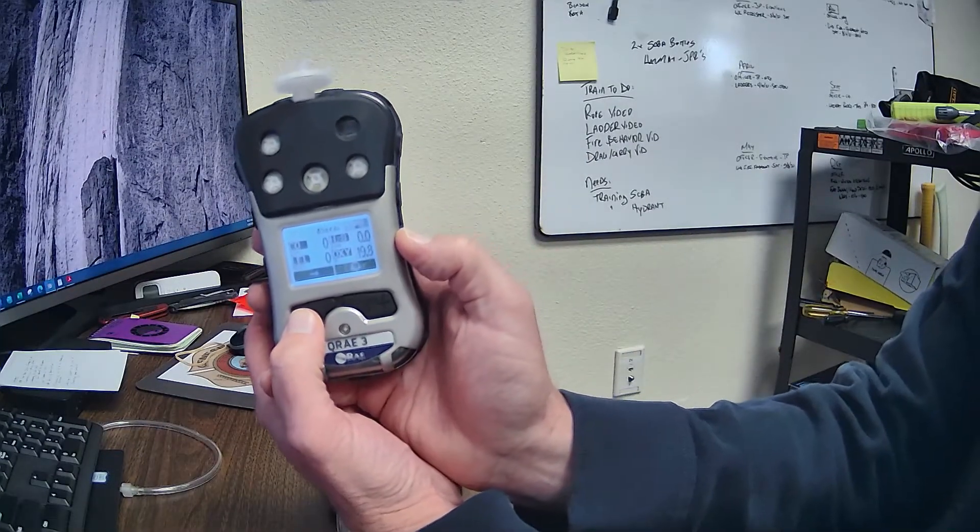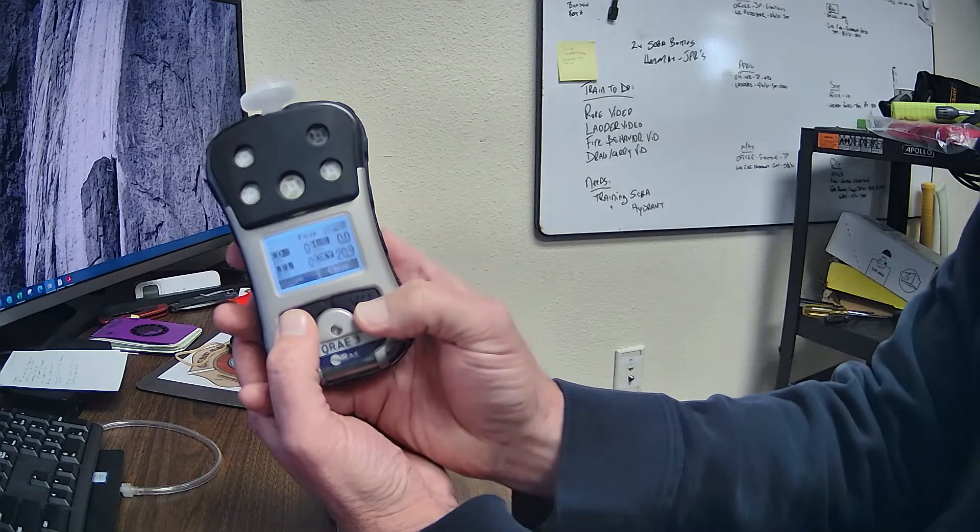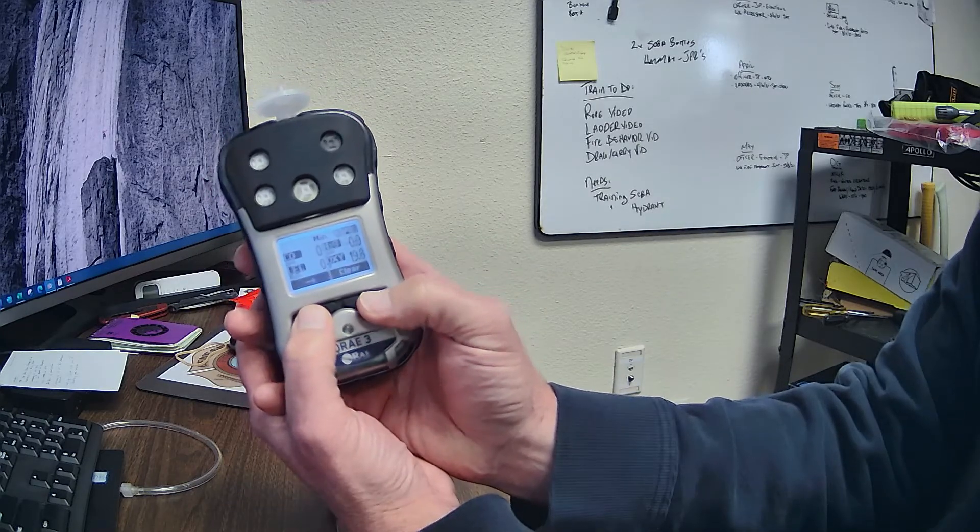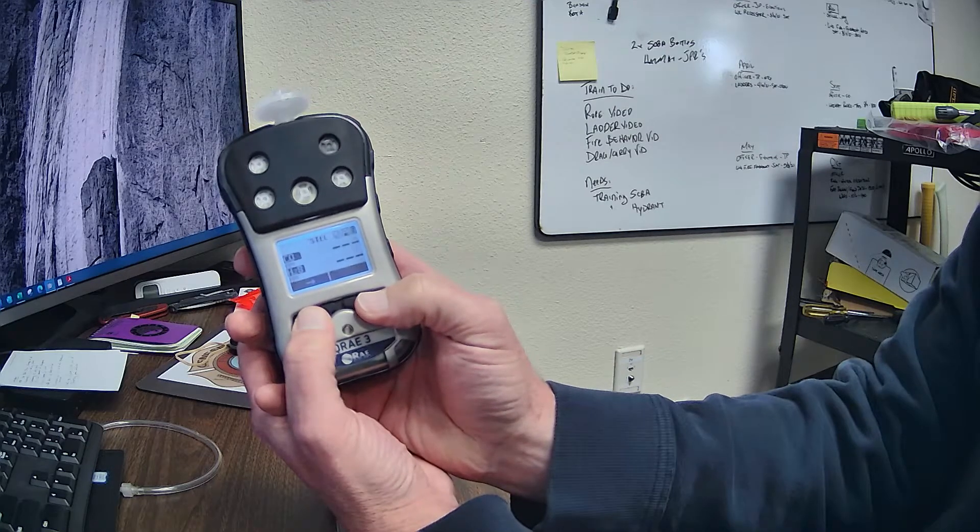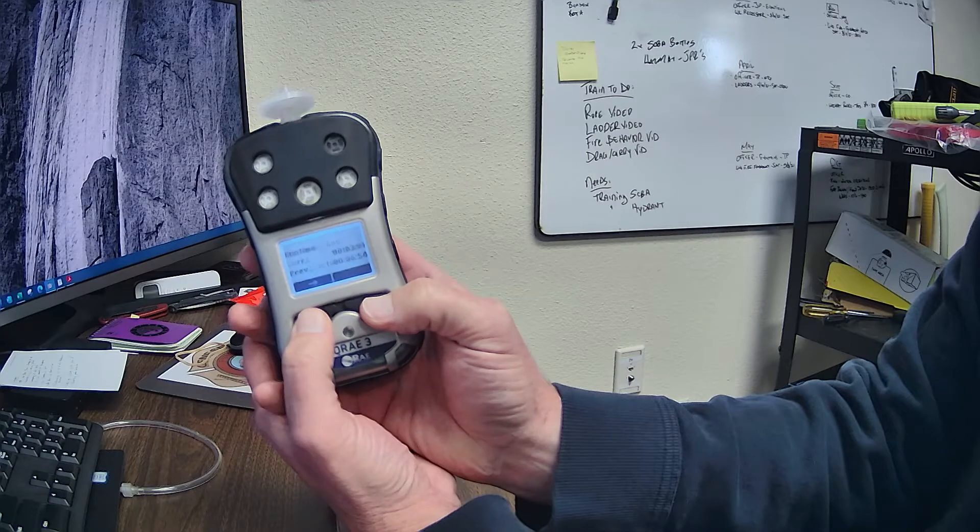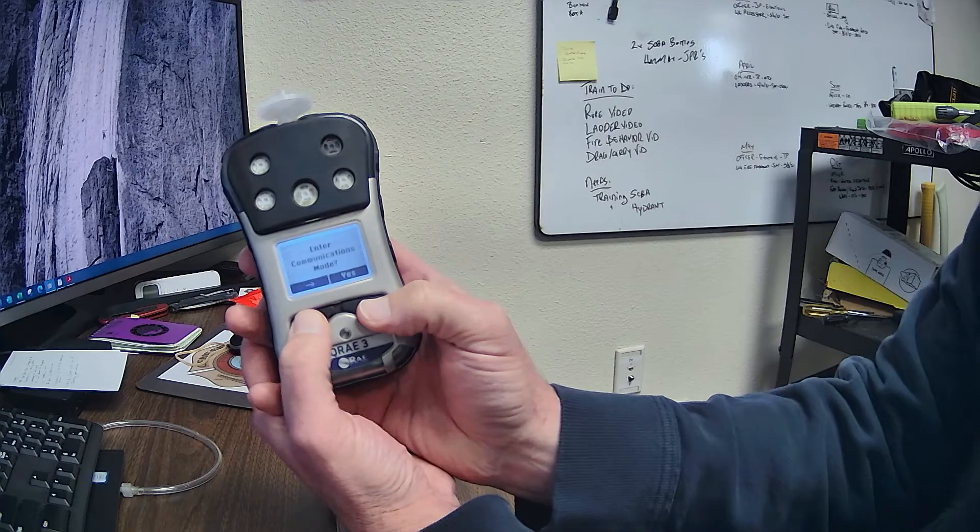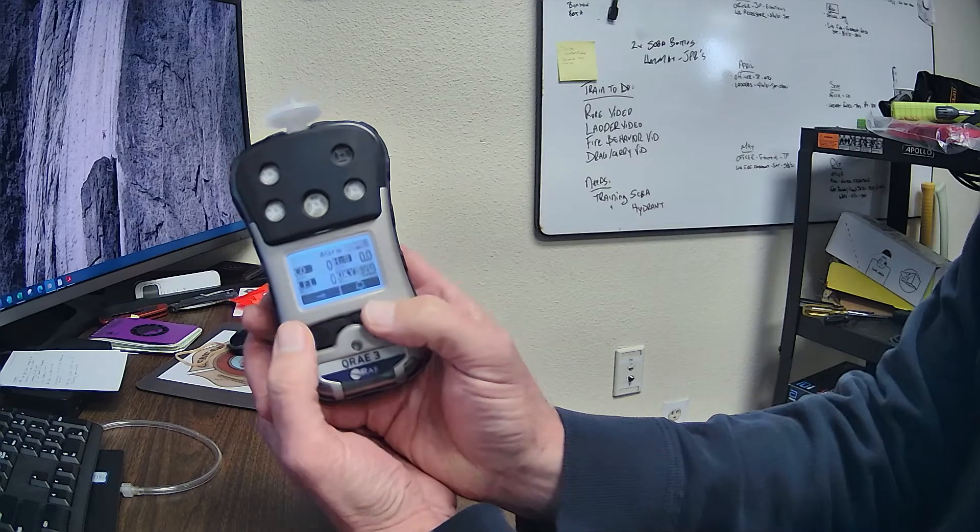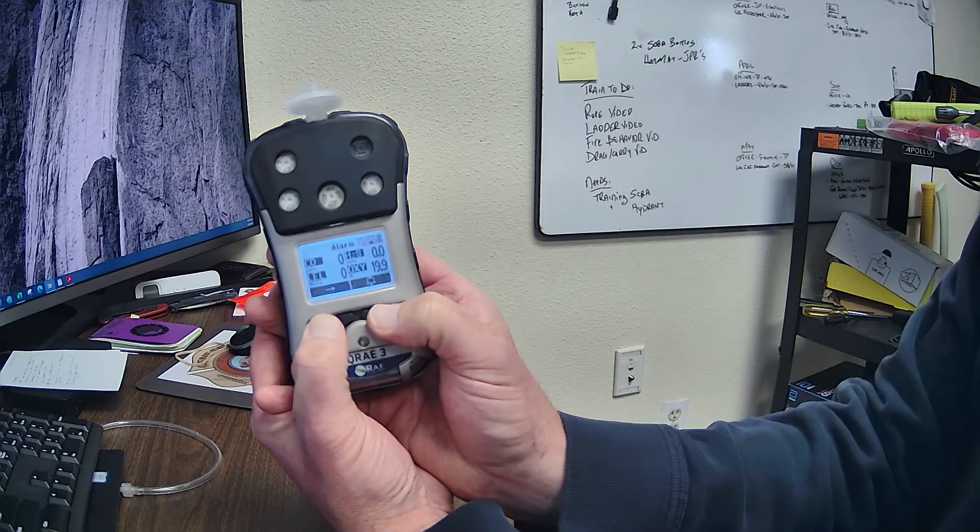All right, so we can hit this button here. We're going to move over. It takes us through the highs and lows, the dates, the battery, we're good. All right, we don't want a comms mode, but we do want to calibrate it. To do that, it's the same as the other one. You hold them both down at the same time.